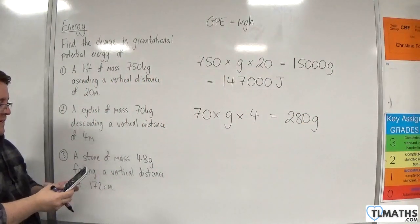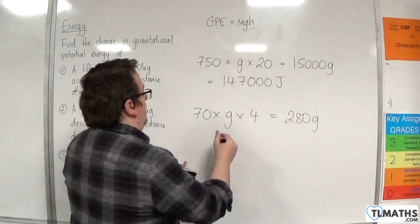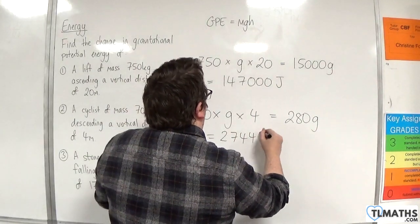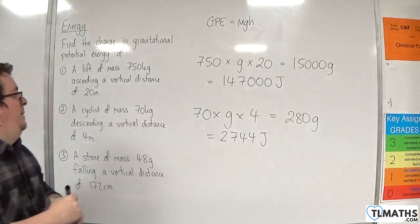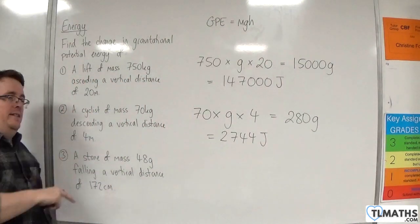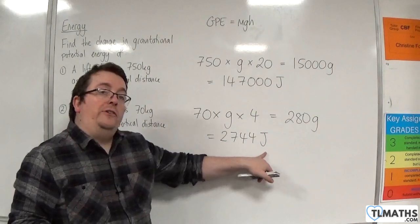So 280 times 9.8 is 2,744 joules. Now, because the cyclist is descending, that means that that is energy that is lost.